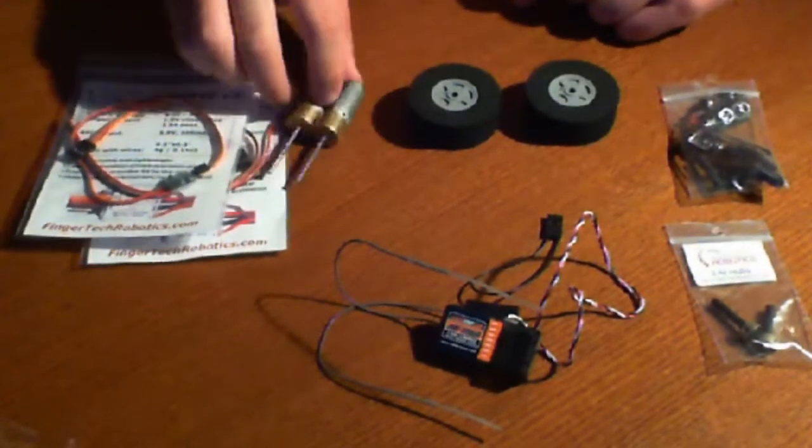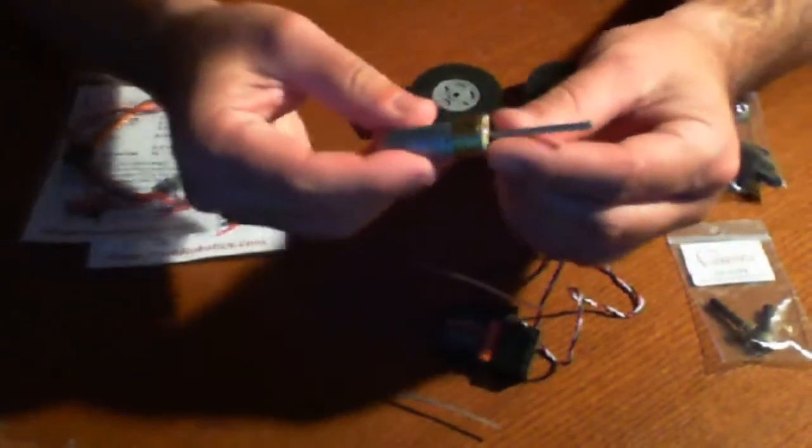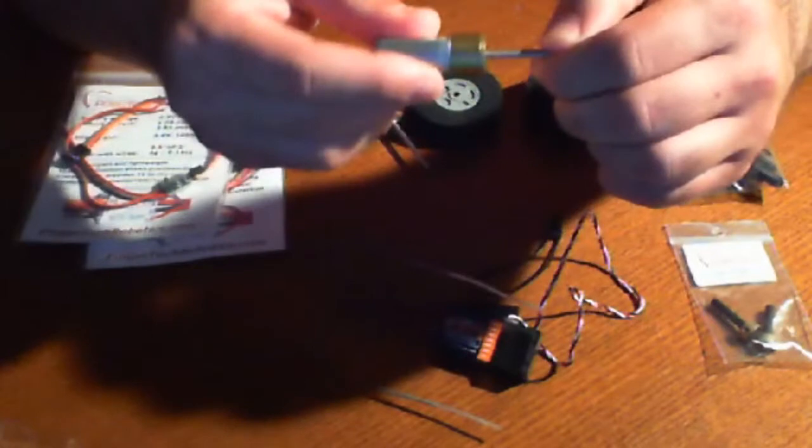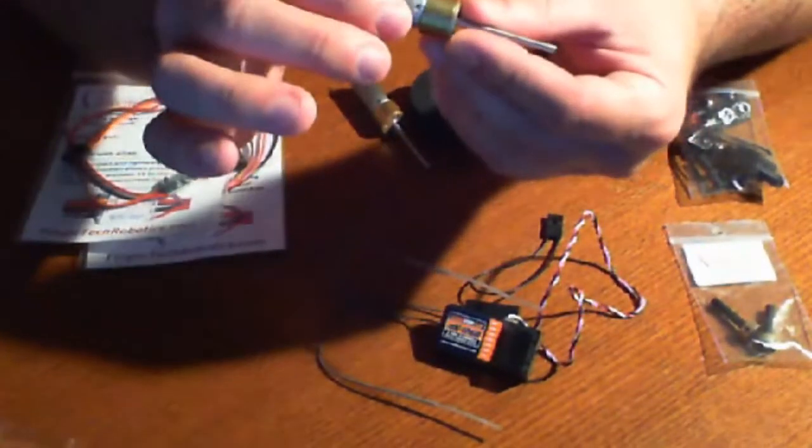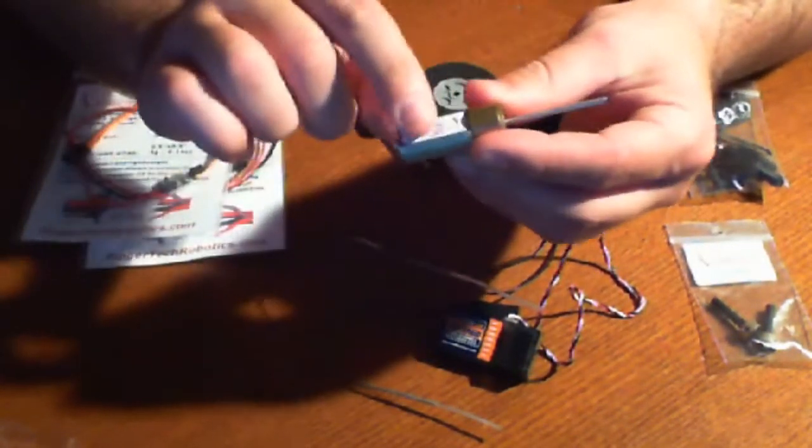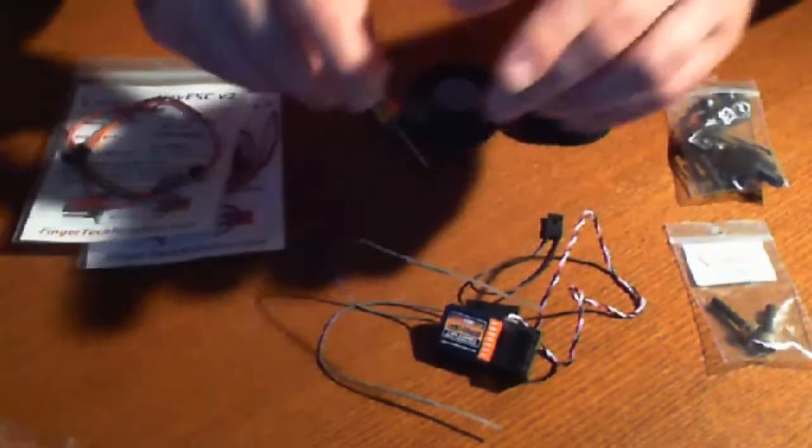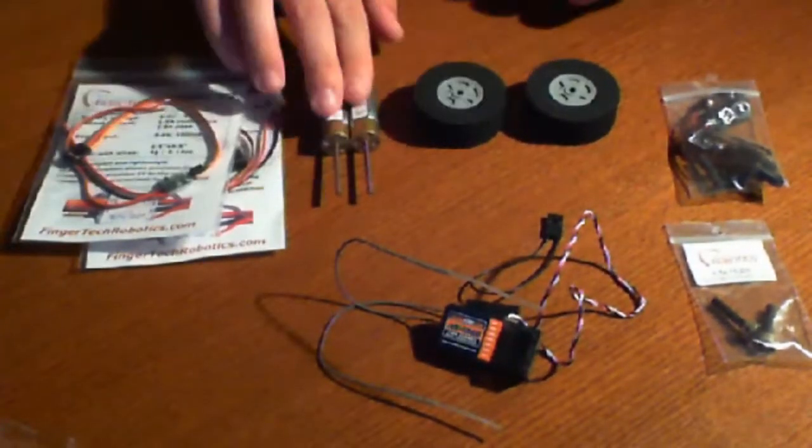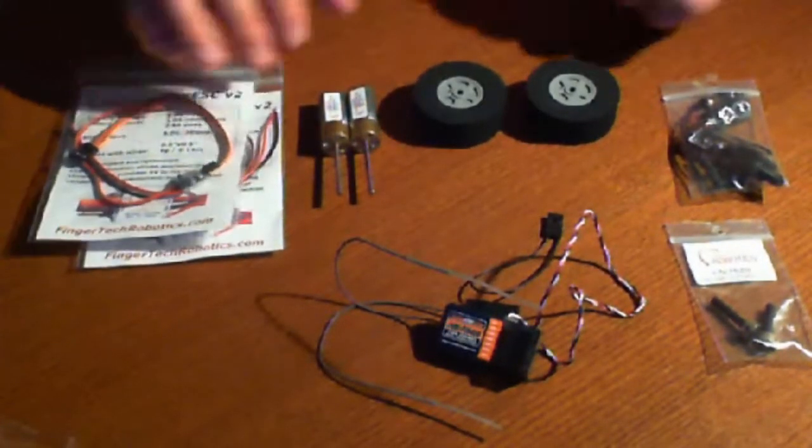As you can see, we have two motors. They're a little bit different than typical motors. They have a longer shaft. It looks like they might be specifically designed just for this kit. There's information right here about Fingertech Robotics, so you always know exactly where it came from. You can probably go to their website and find replacement motors if you have to.